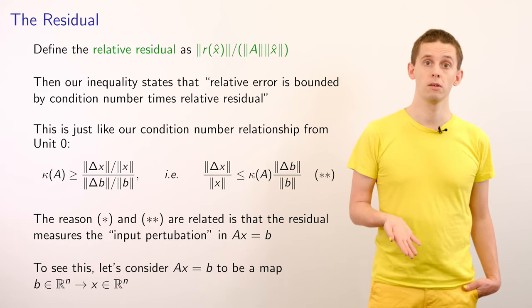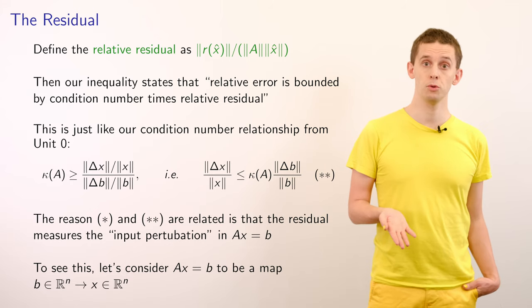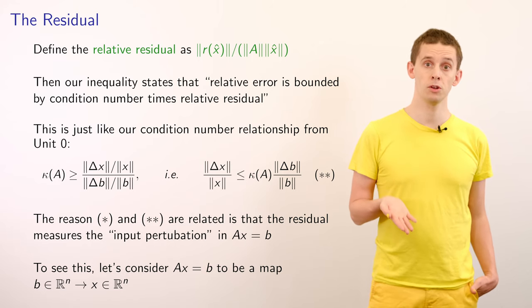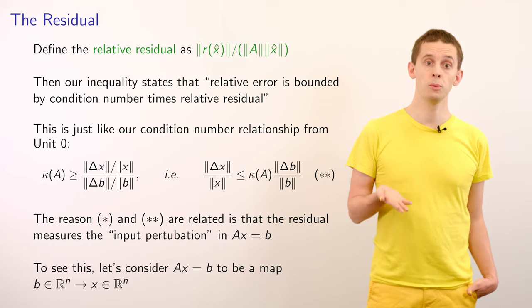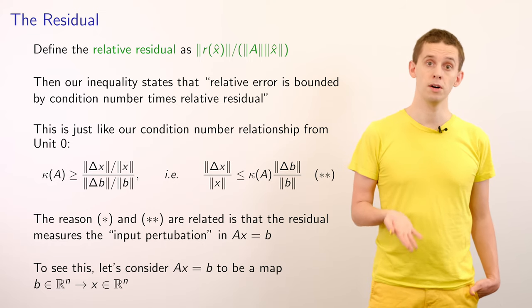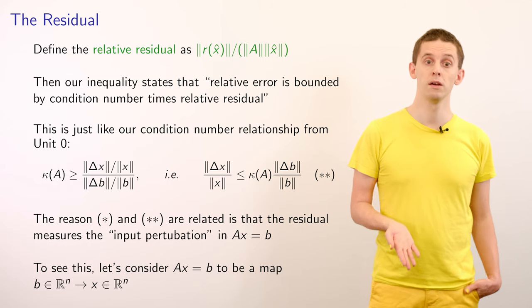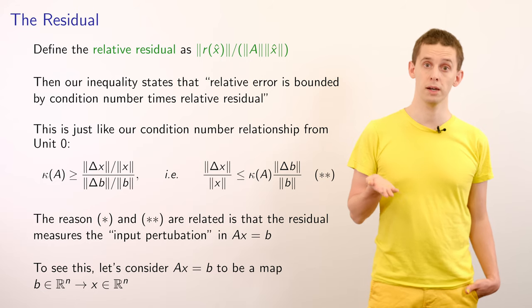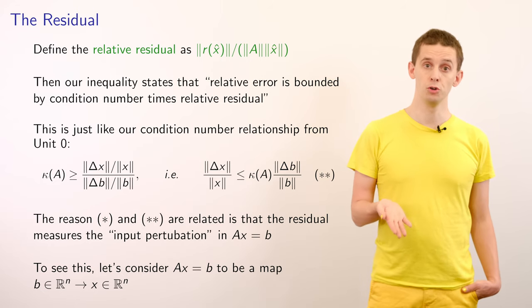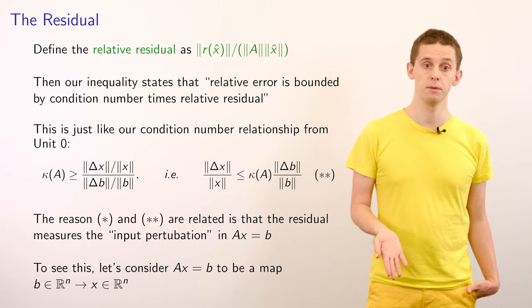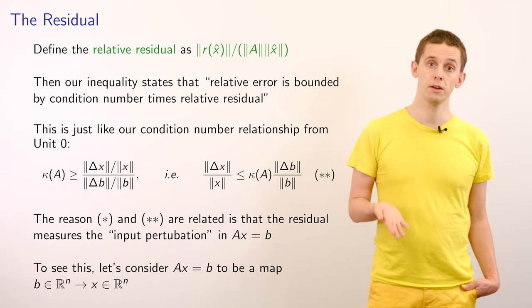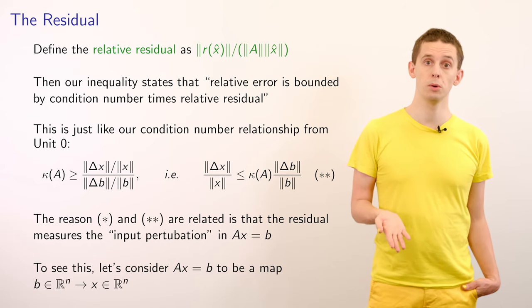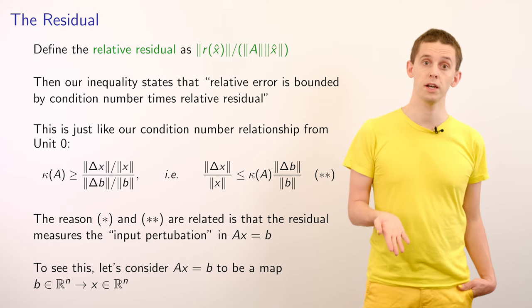So in this case here, we're thinking about our input values as being our vector b and our output values as being x. And so from unit 0, we could write down that the condition number of our matrix A would be greater than or equal to the norm of our perturbation Δx divided by the norm of x over the norm of Δb divided by the norm of b. And that could be rewritten then as saying that the norm of Δx divided by the norm of x is less than or equal to the condition number times the norm of Δb divided by the norm of b.